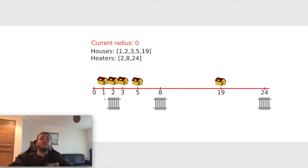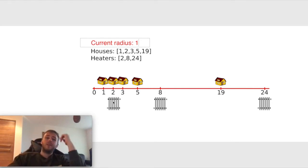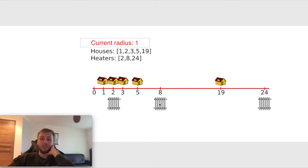The input array of houses is [1, 2, 3, 5, 19] and the heaters array is [2, 8, 24]. Starting from house number 1, there are no heaters on the left side, but there is a heater on the right side. The radius should be equal to 1 because 2 minus 1 equals 1. Moving to the next house, there is a heater at the same place, so the distance is 0. There is also another heater on the right side and the distance from this house to that heater is 6, so the minimal distance is 0.